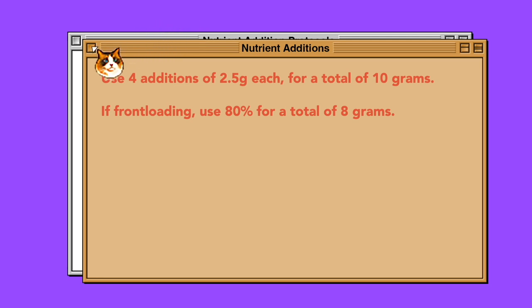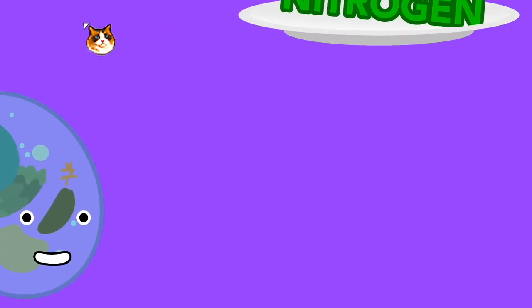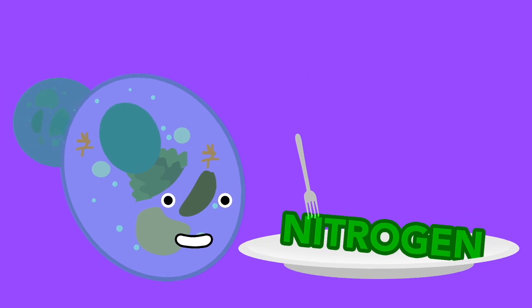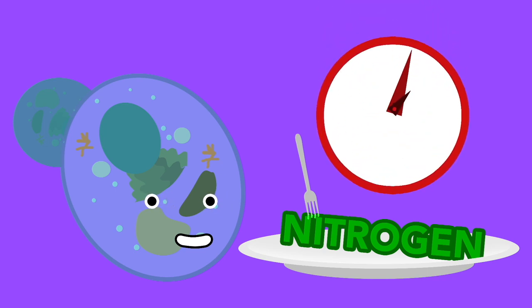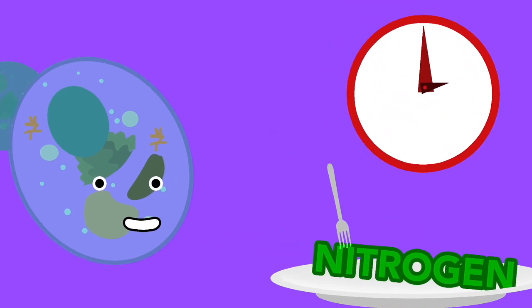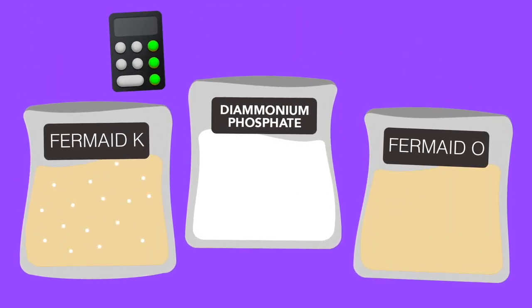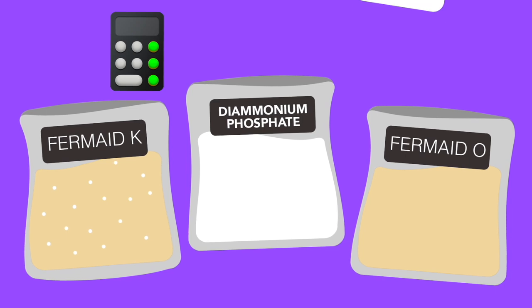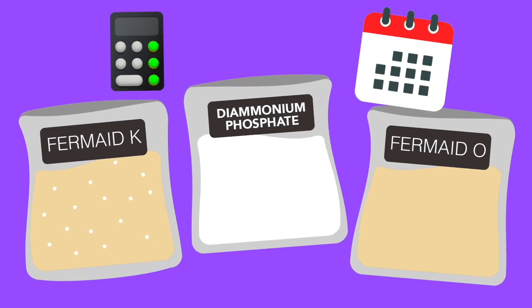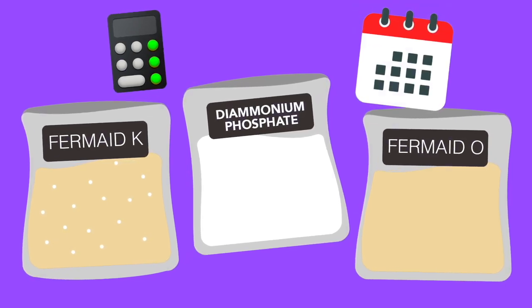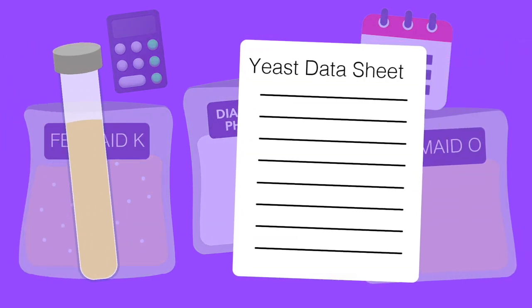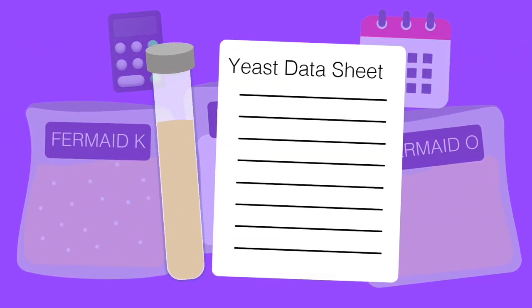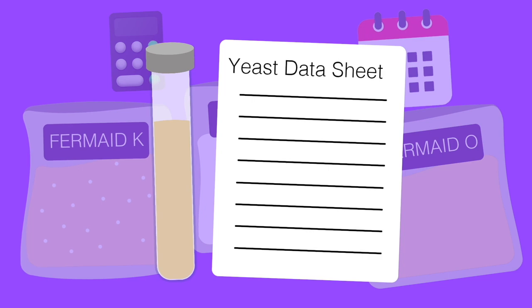The basics are that yeast need nitrogen to stay healthy in their conquest to eat sugar and turn it into alcohol for us. Without nitrogen, you can get off flavors and very long aging times. If new to mead nutrients, choose the type of nutrient that works best for you, use a nutrient calculator to determine how much you need and when, and if using a commercially available wine or beer yeast, check with the manufacturer to see if they have a data sheet you can refer to regarding how much nitrogen your yeast needs.